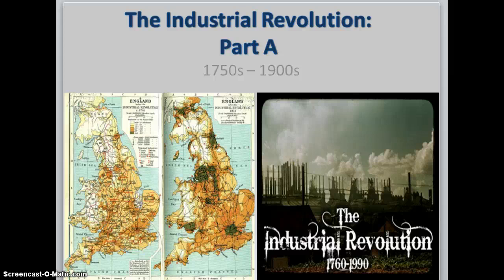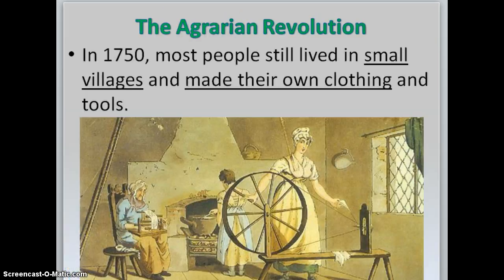The Industrial Revolution spanned the 1750s to the early 1900s. It started off with the Agrarian Revolution — agrarian meaning farming.